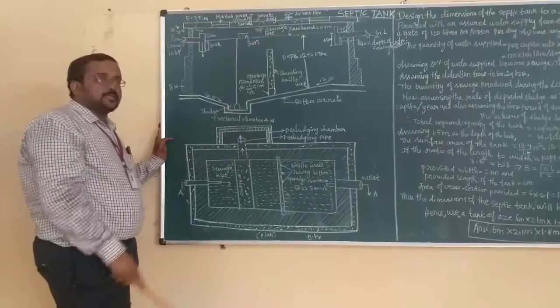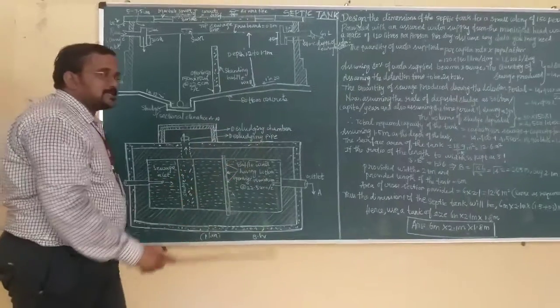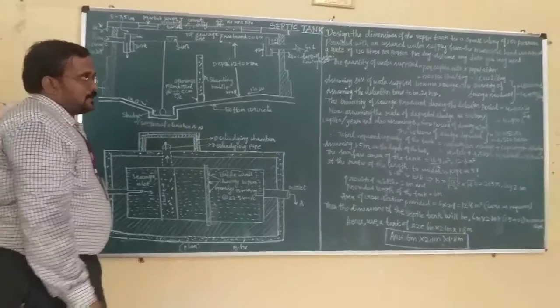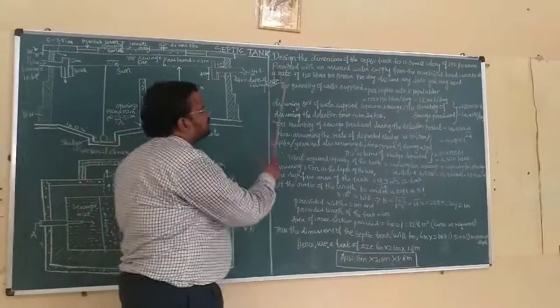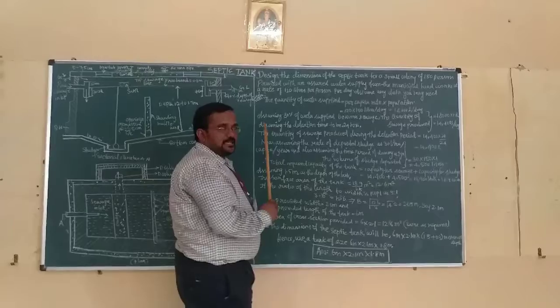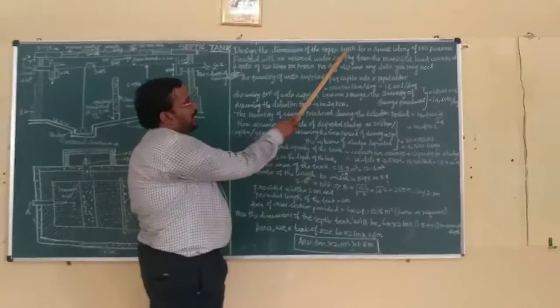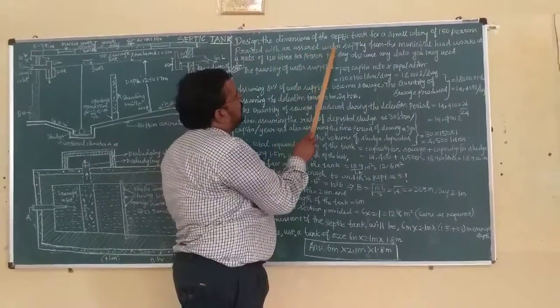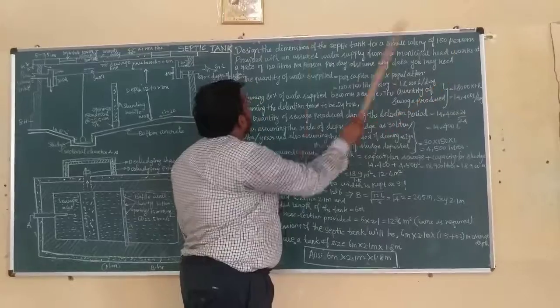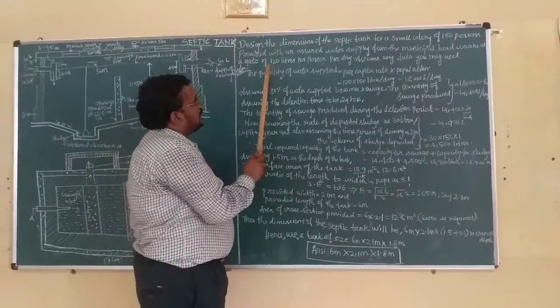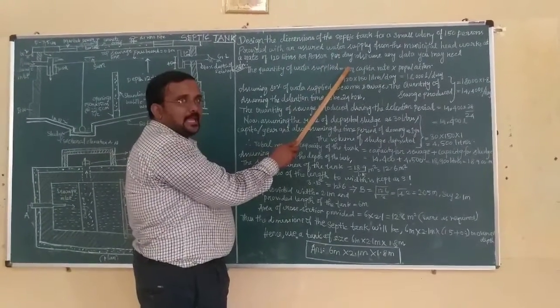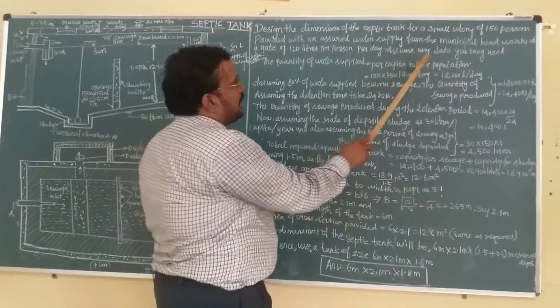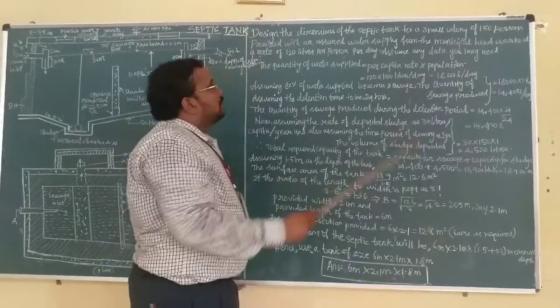The working principle is anaerobic digestion process. As far as this structure is concerned, we will focus more on the problem part. Now let us see the problem. Design the septic tank for a small colony of 150 persons provided with an assured water supply from municipal mains at the rate of 120 liters per person per day. Assume any data you need.